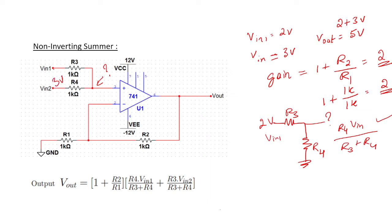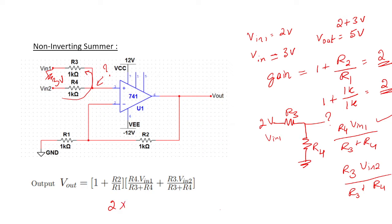Similarly, when only Vin2 is applied and the other input is grounded, the contribution is R3 times Vin2 divided by (R3 + R4). Since both resistances are equal, each input appears as half its value at the node. But the gain is purposefully set to 2 to compensate, so 2 times one-half gives 1, and the full sum appears at the output — yielding 5 volts as expected.